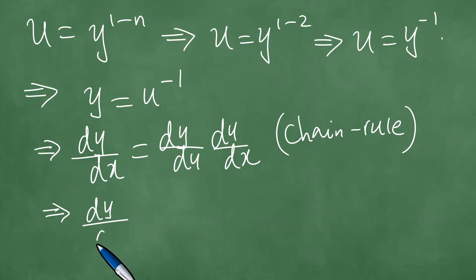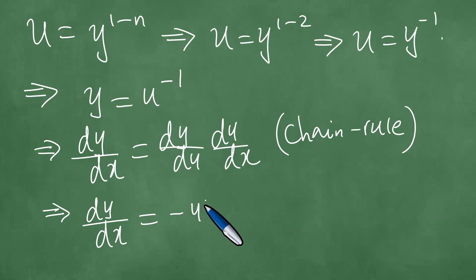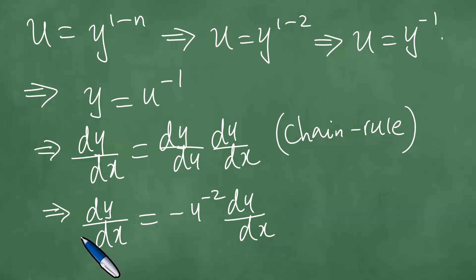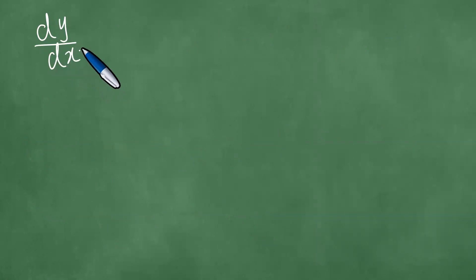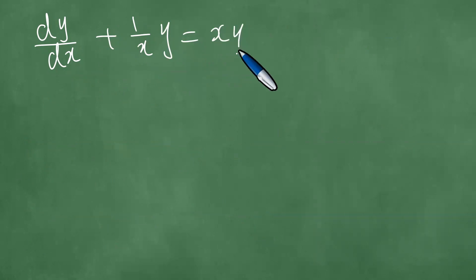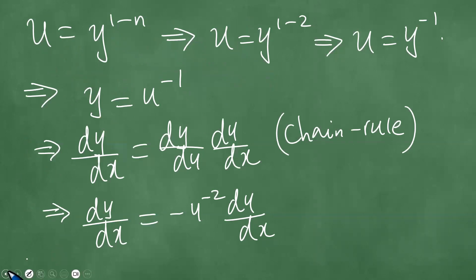dy/dx equals minus u to the minus 2 times du/dx. Now we recall that we transformed the differential equation to the form dy/dx plus 1 over x times y equals x y squared, and we bring that form back. So dy/dx is minus u to the minus 2 du/dx.